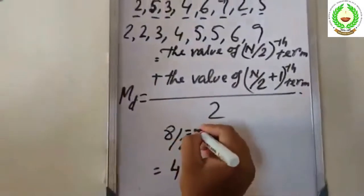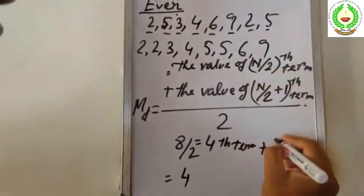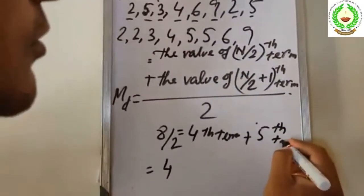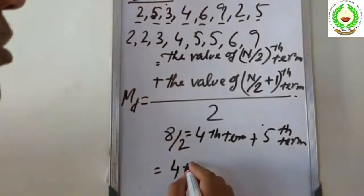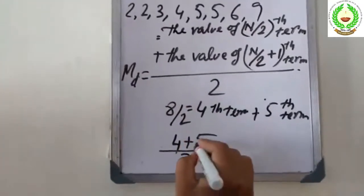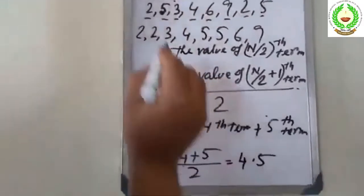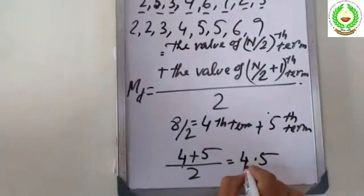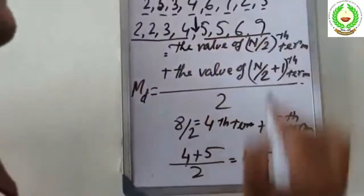The median equals the n/2-th term plus the n/2+1-th term, divided by 2. So that is the 4th term plus the 5th term. The value of the 4th term plus the 5th term divided by 2 gives 4.5, which represents the 50 percent score.